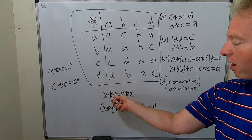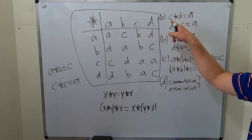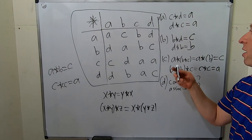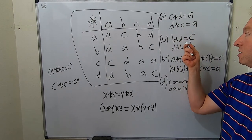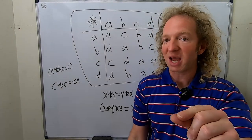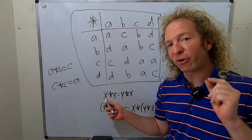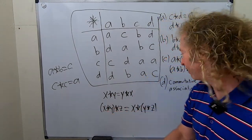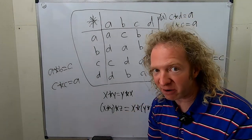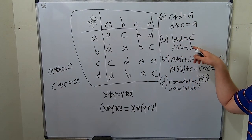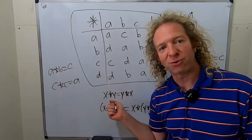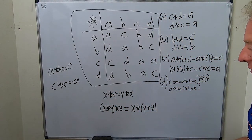Let's check commutativity. We found c star d equals a and d star c equals a, so those commute. However, b star d equals c but d star b equals b — so those don't commute. All it takes is one counterexample for the operation to fail to be commutative. So the answer is no, it is not commutative.